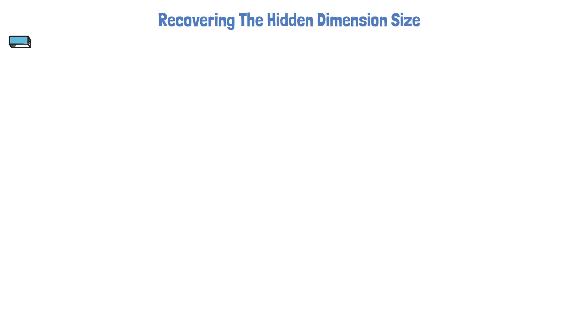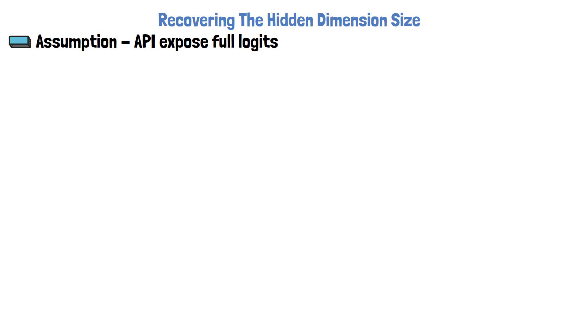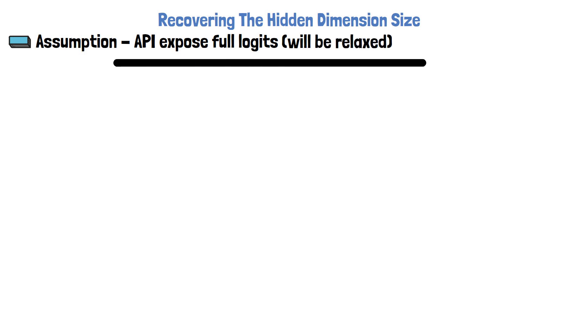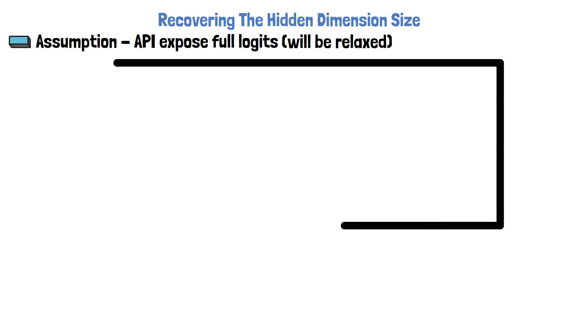Let's now start to dive into the attack details, starting with the most simple case of recovering the hidden dimension size only. For this, we have an assumption that the API exposes full logits, meaning we get from the API the logits of all tokens in the model vocabulary. This is a tough requirement since in practice APIs provide just the top log probabilities and not all of the logits, but we'll see later that this requirement is removed.